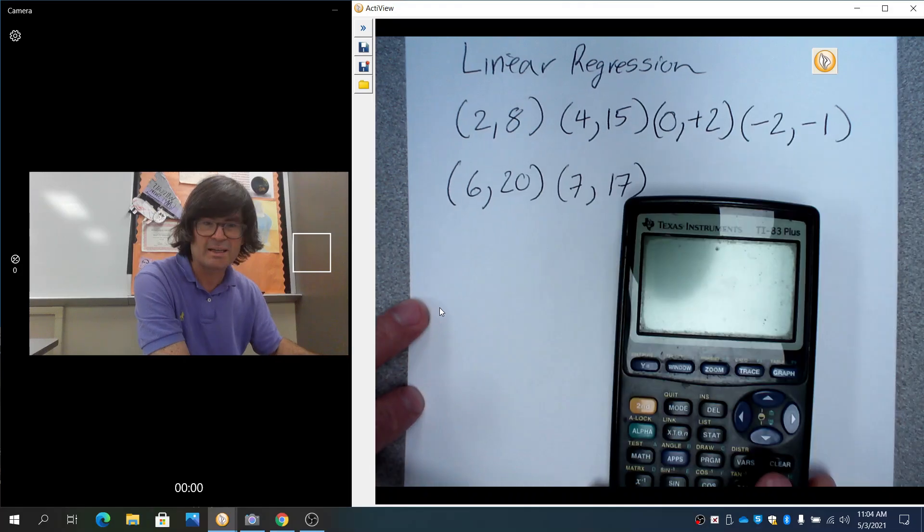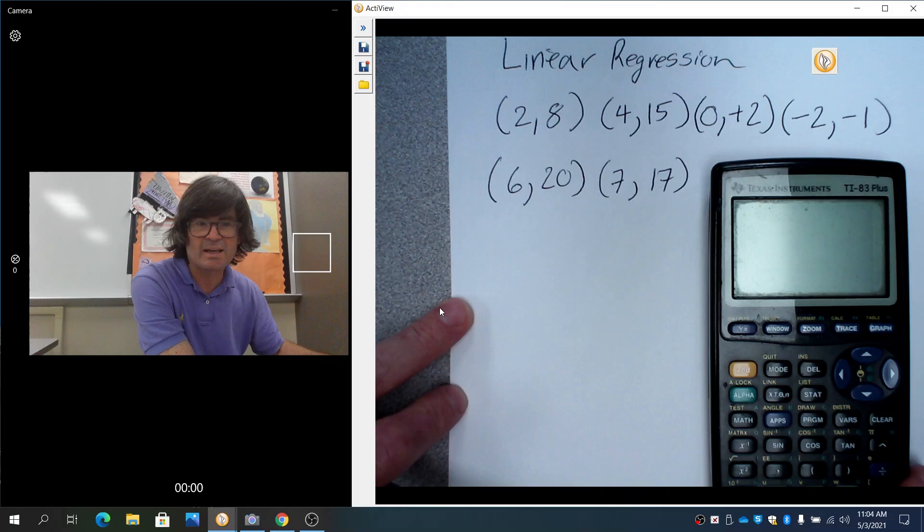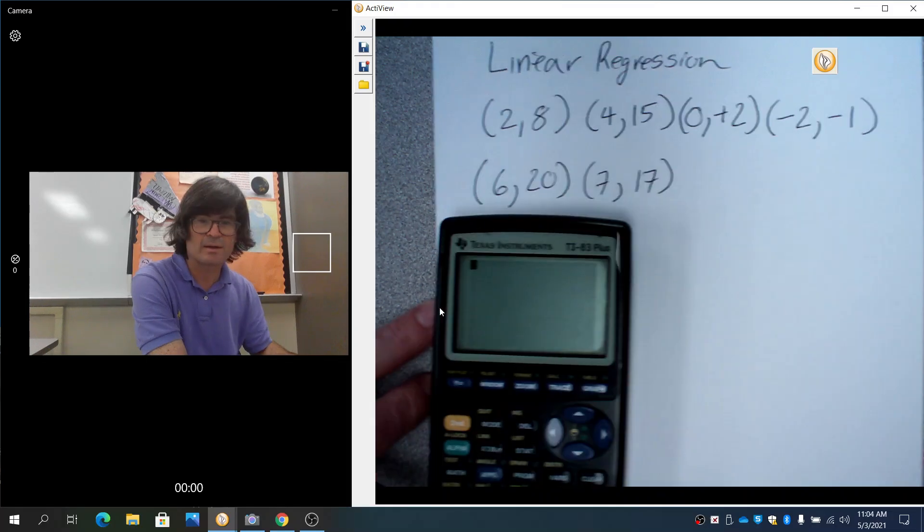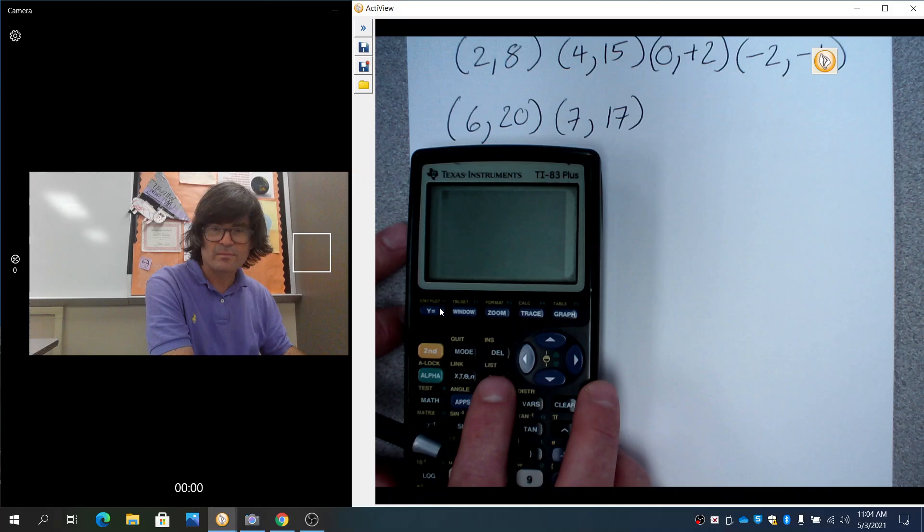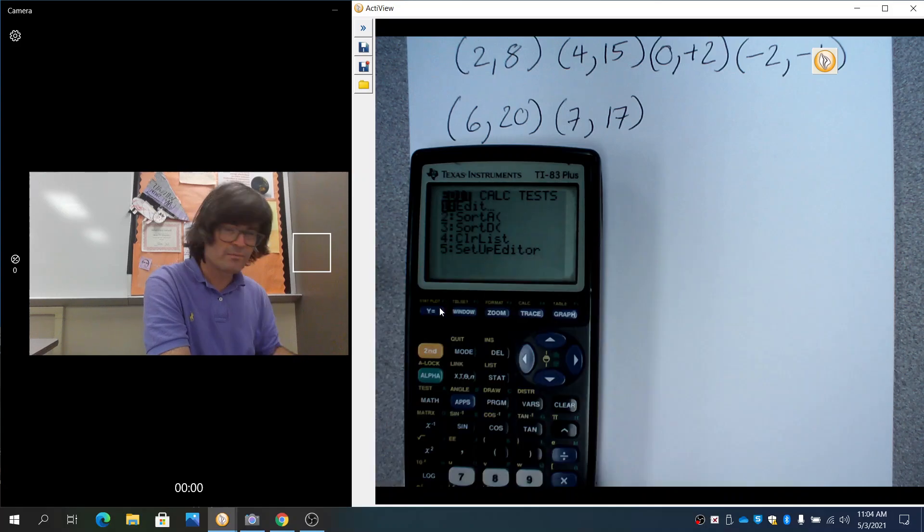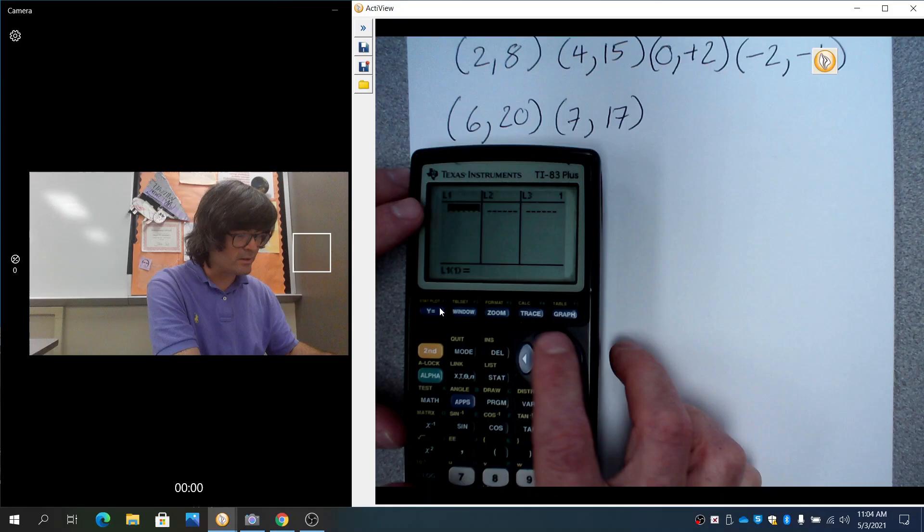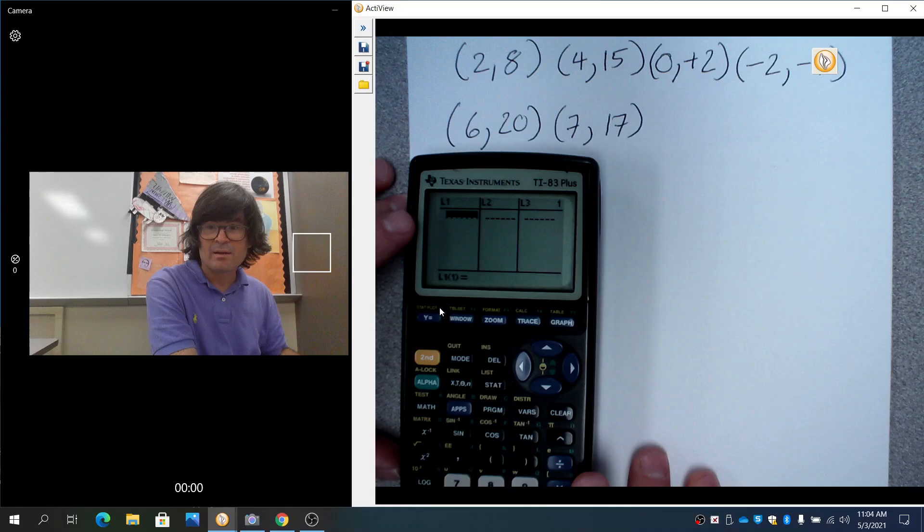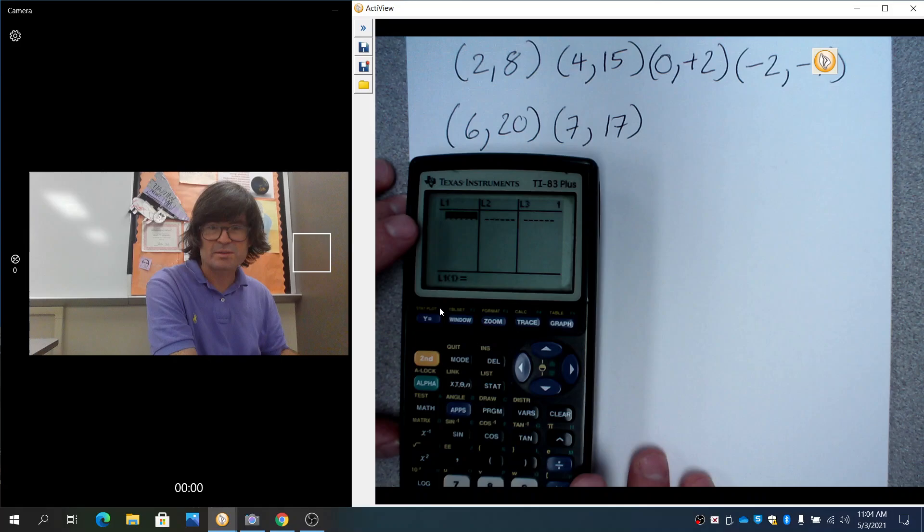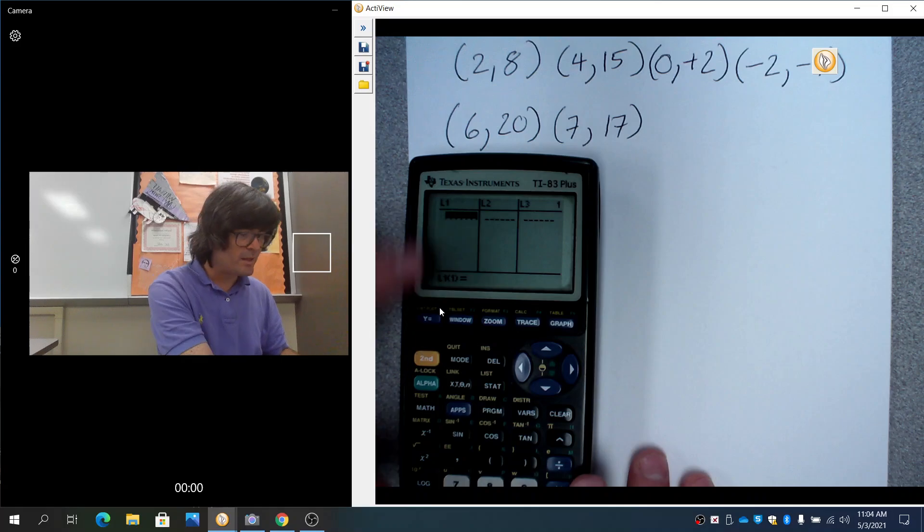So here's my TI-83 calculator. The first thing is I want to enter all this data into a list. I'm going to go to the STAT key right here, and then I'm going to go to EDIT. If there's anything in the list already, you can go up to list one, hit CLEAR and ENTER and it'll clear all that out. I want to type the x's in list one and then I'll type the y's in list two.